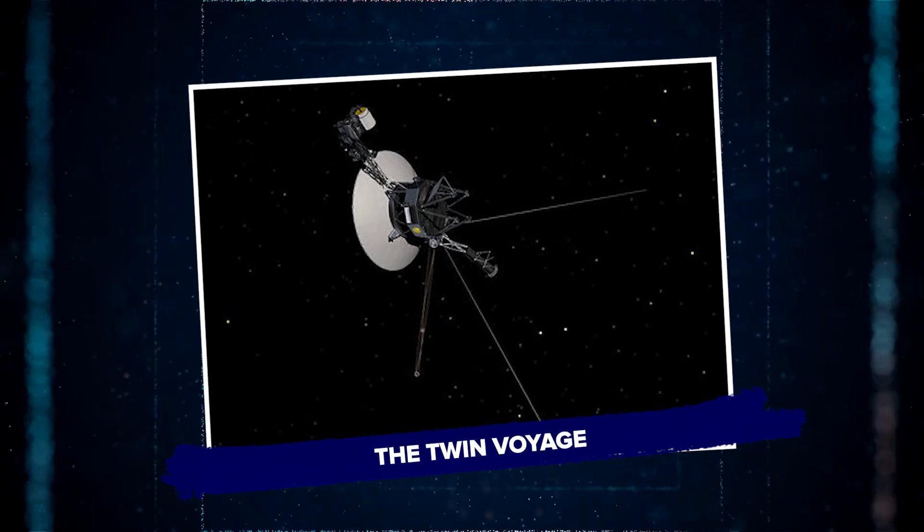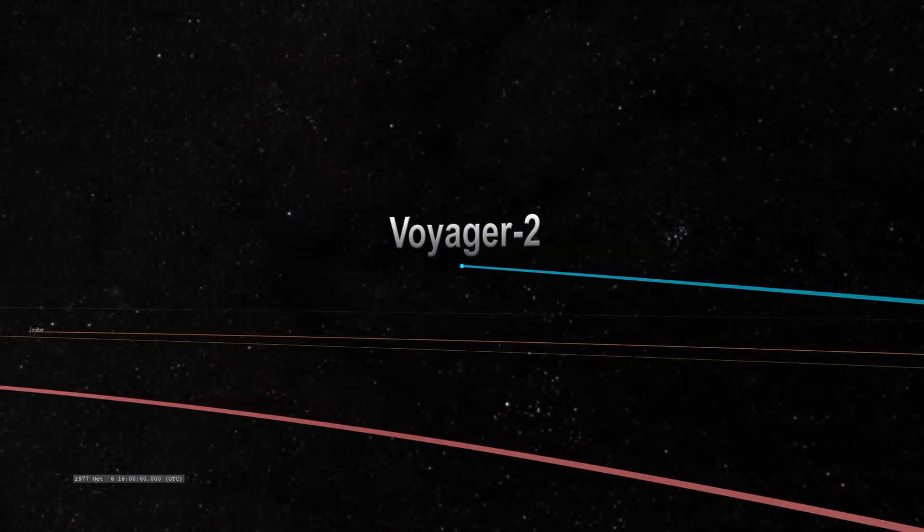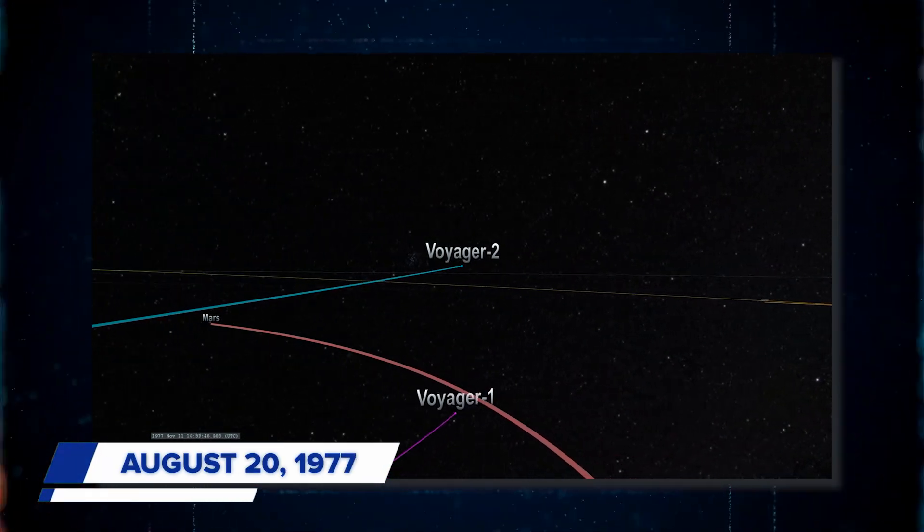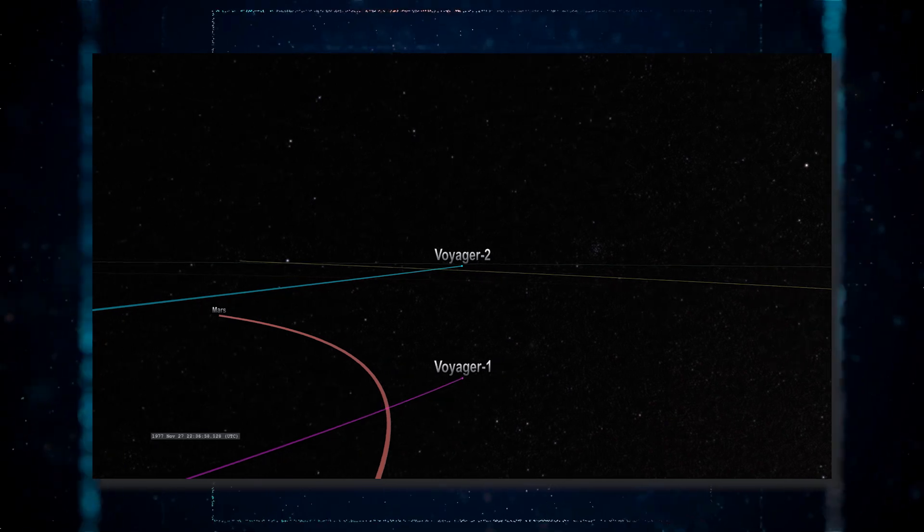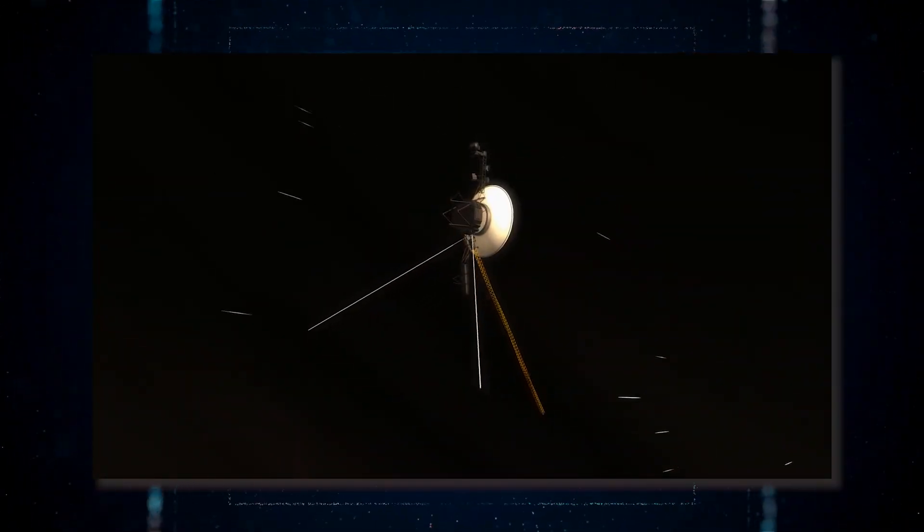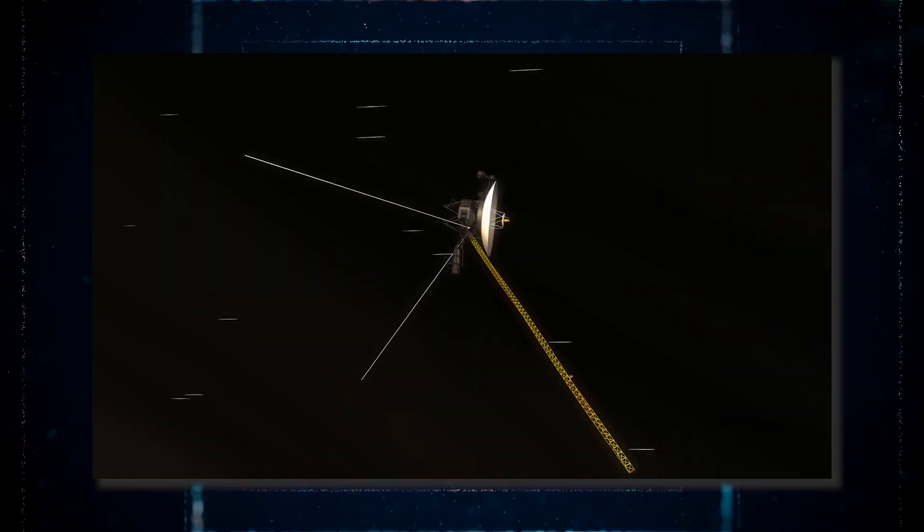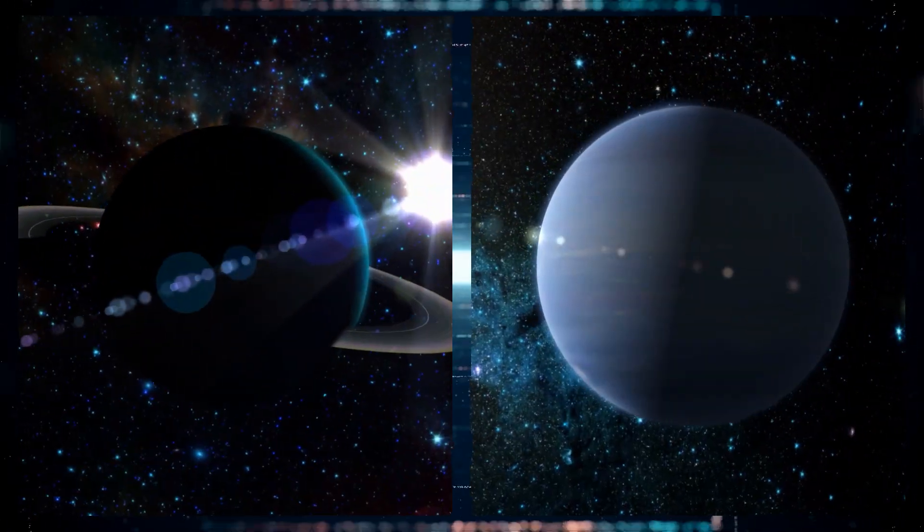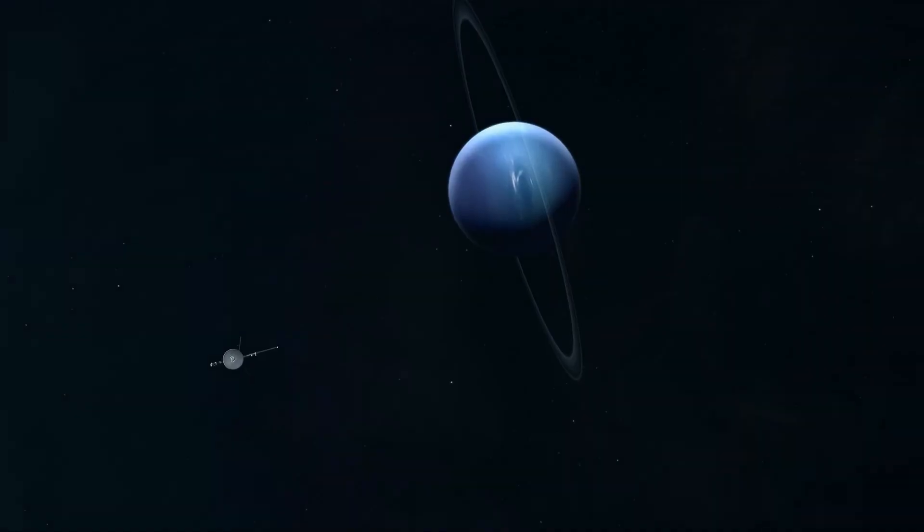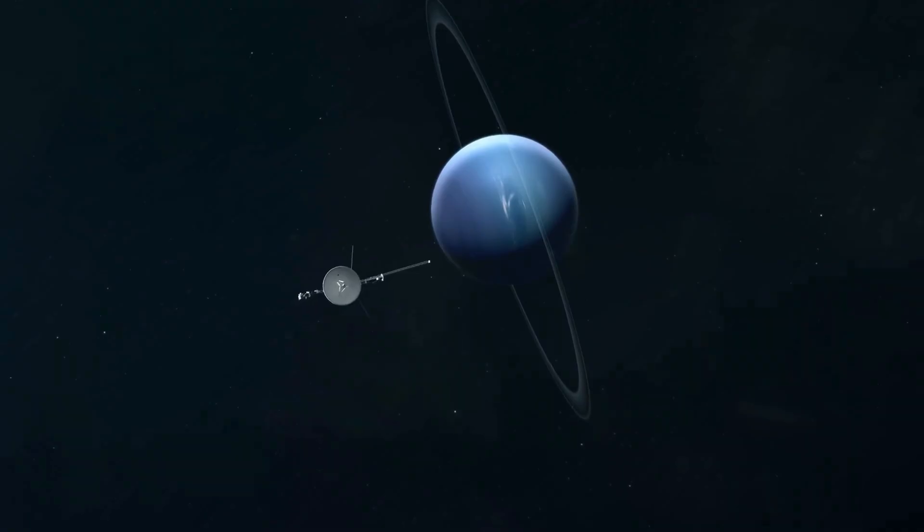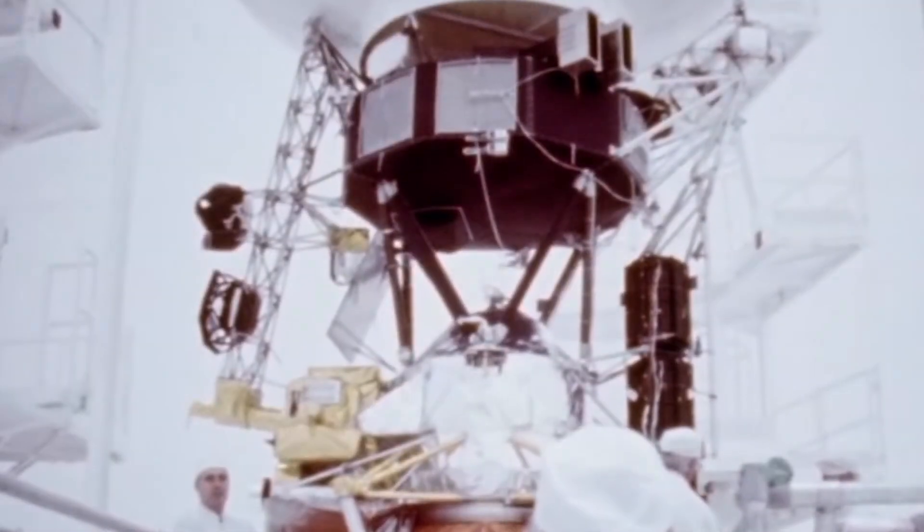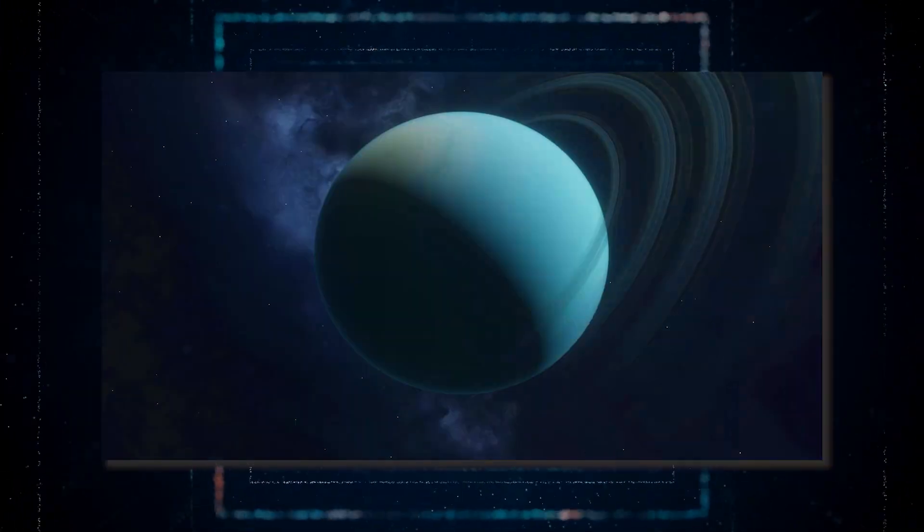The Twin Voyage. Voyager 2 set off on an incredible journey into space before its twin, Voyager 1, did. It launched on August 20th, 1977, a couple of weeks before Voyager 1's own departure on September 5th. This timing was crucial because Voyager 2 had a special path to follow. It needed to launch first to line up perfectly with the planets it was set to explore. Although Uranus and Neptune weren't initially on the agenda, the path Voyager 2 took didn't rule them out for future visits. Both Voyager missions had the primary goal of exploring Jupiter and Saturn. The people who built the Voyager spacecraft, like William Kurth, made sure they could potentially travel further, to Uranus and Neptune.